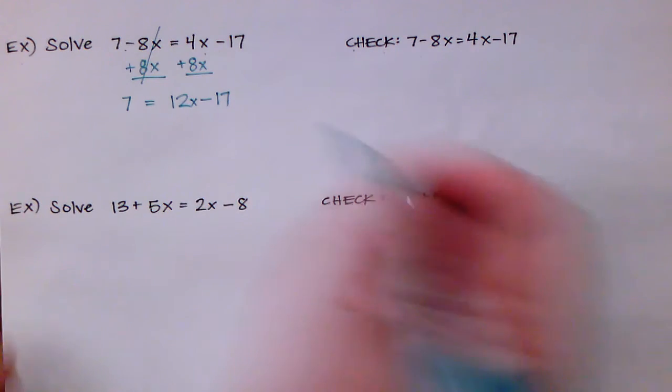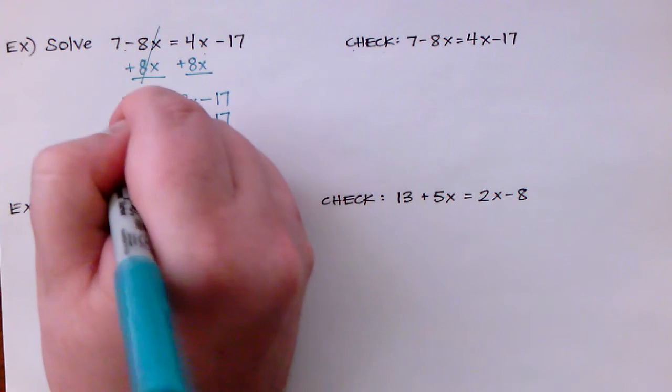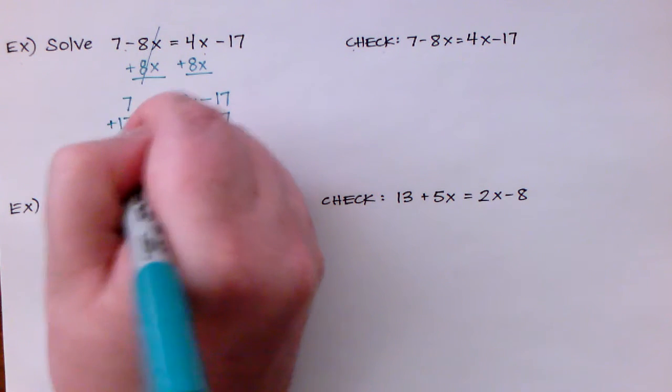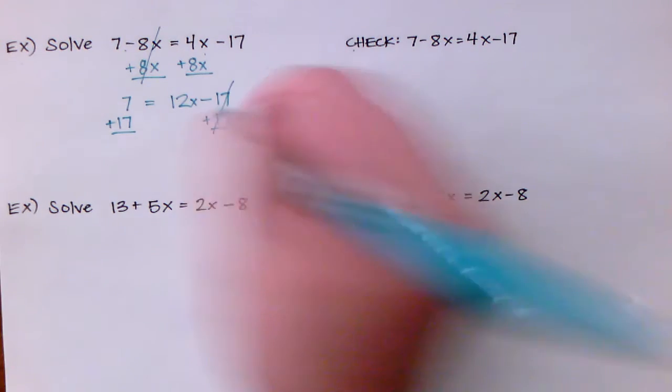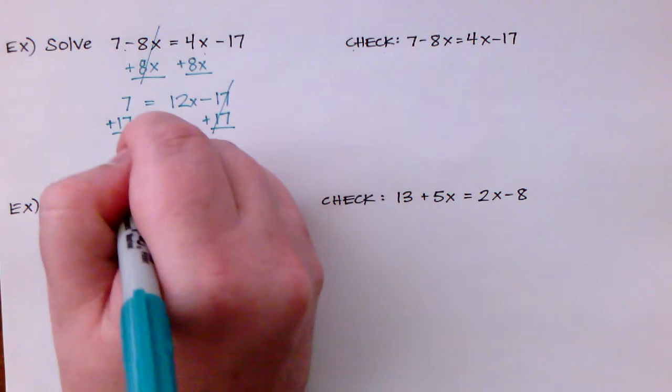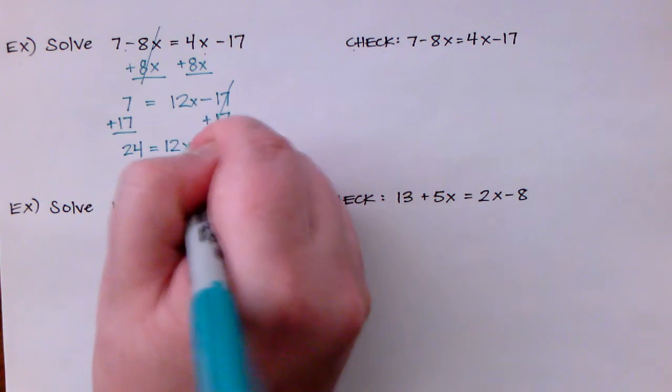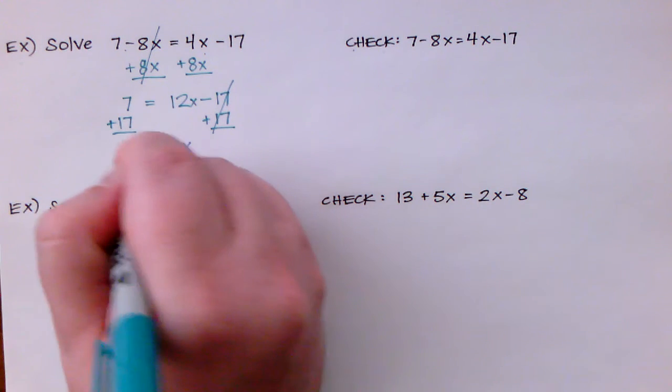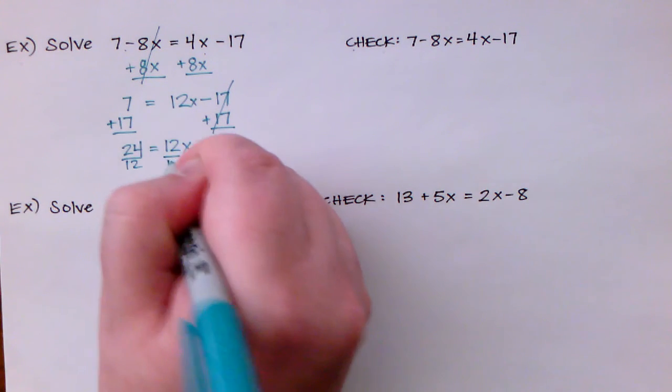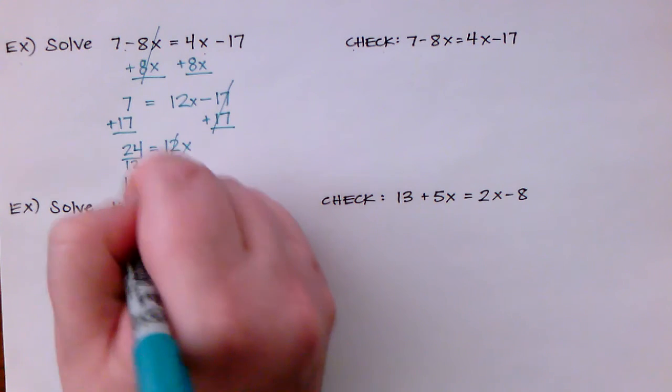Okay now I'm going to move the 17 to the other side so that I can get this x all by itself, and I do that by adding 17 to both sides. So now those cancel each other out. I'm left with 24 on the left side is equal to 12x. One more step—I need to get the x by itself so I'm going to divide both sides by 12 and I find that x is equal to 2.